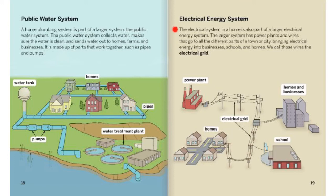Electrical energy system. The electrical energy system in a home is also part of a larger electrical energy system. The larger system has power plants and wires that go to all the different parts of a town or city, bringing electrical energy into businesses, schools, and homes. We call those wires the electrical grid. Power plant, electrical grid, homes, school, and businesses.